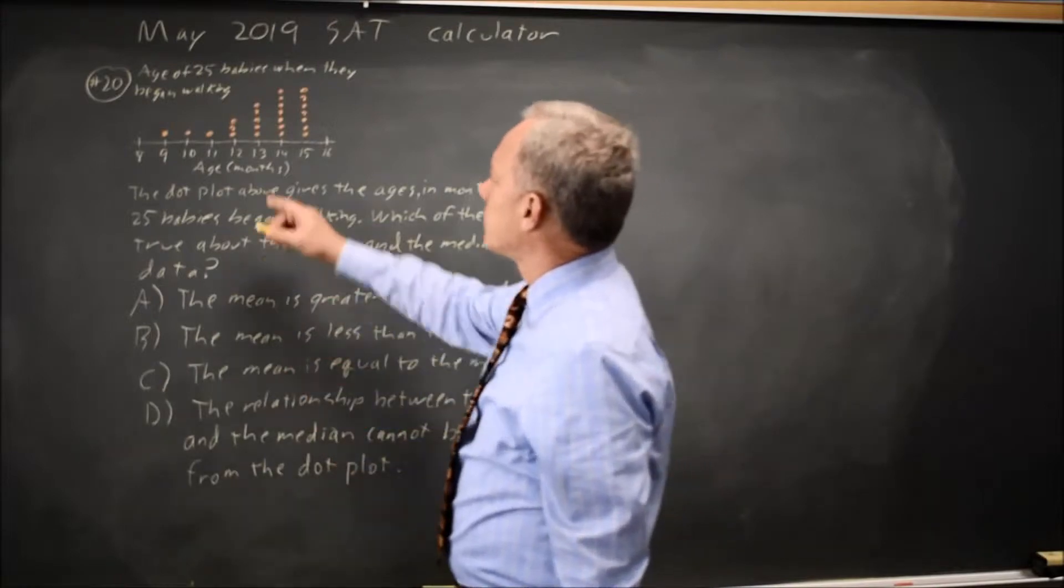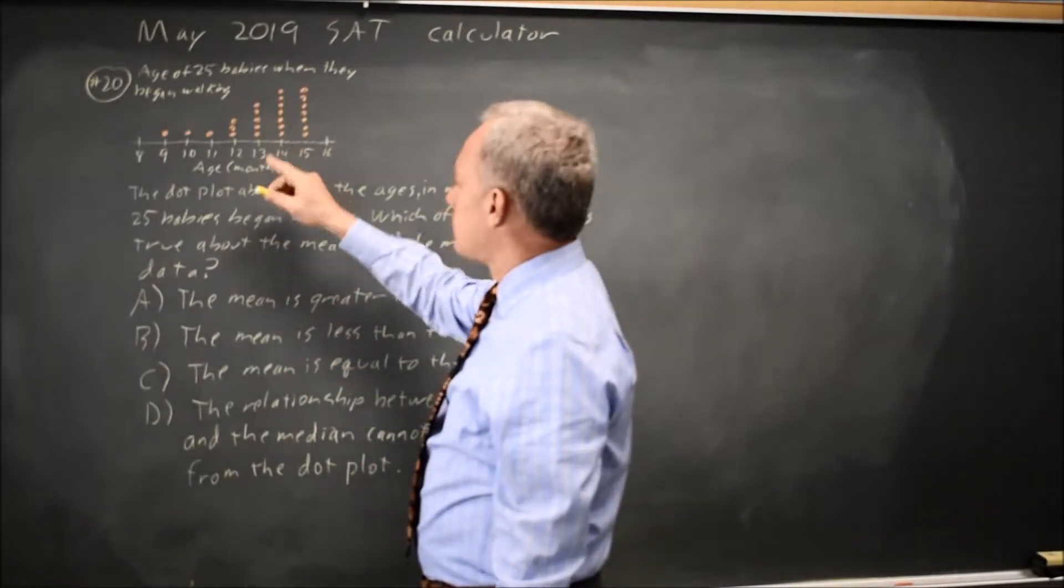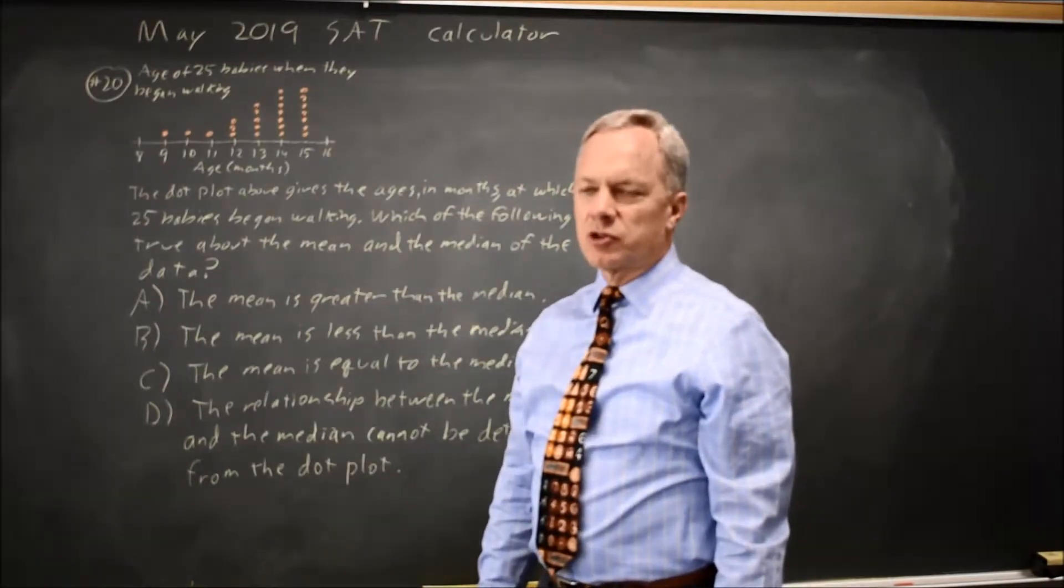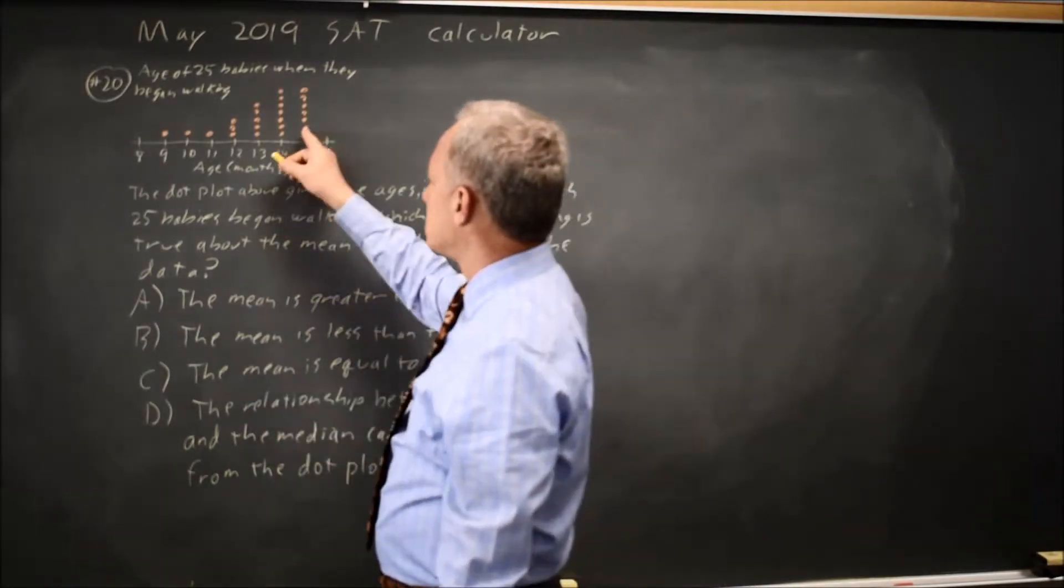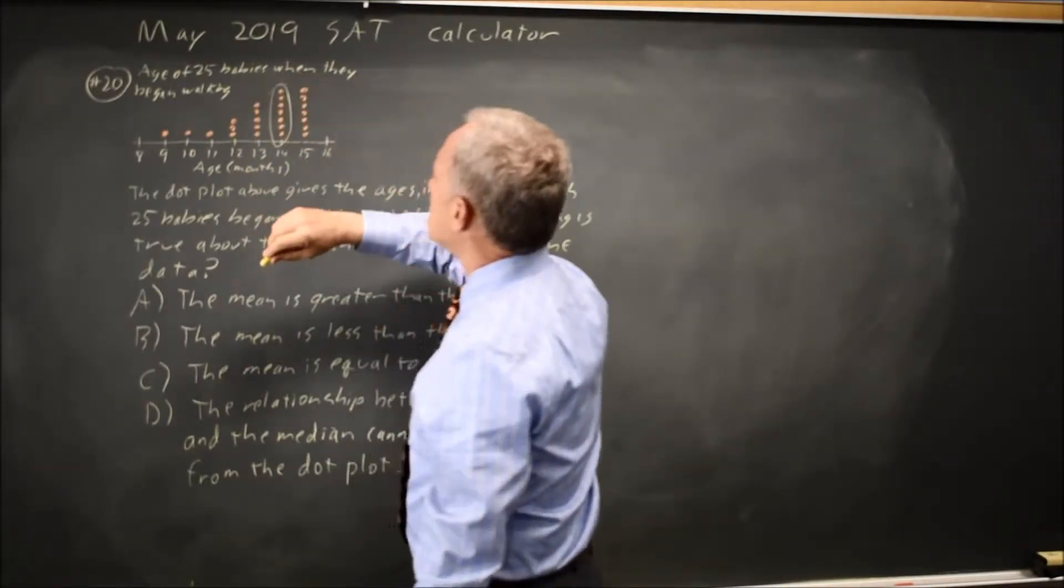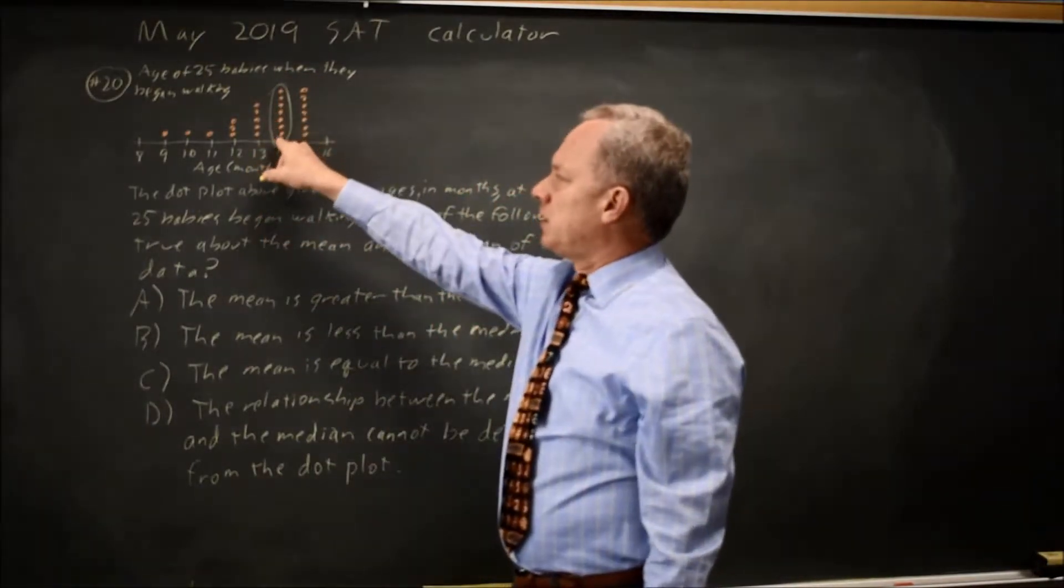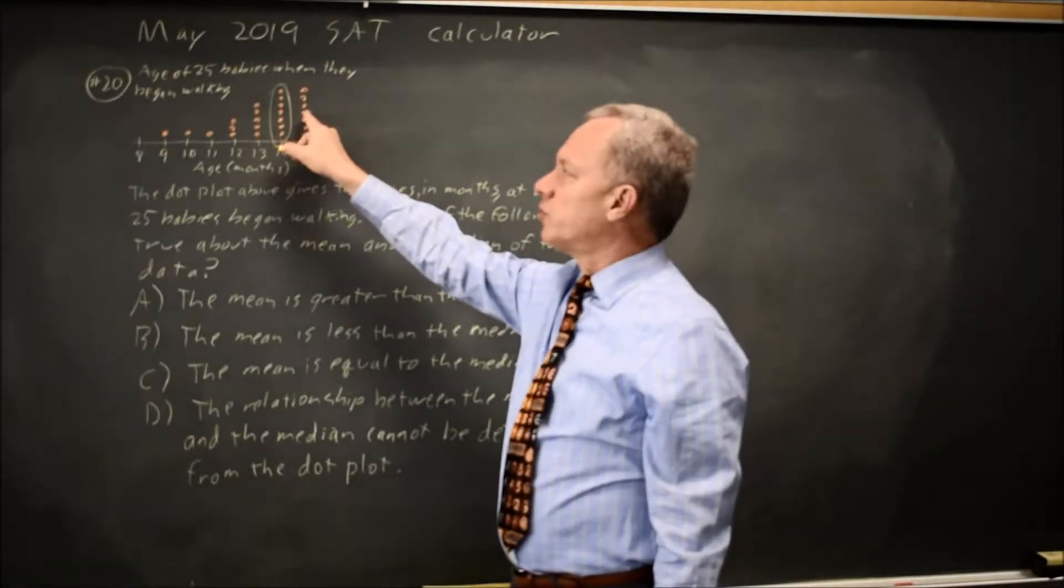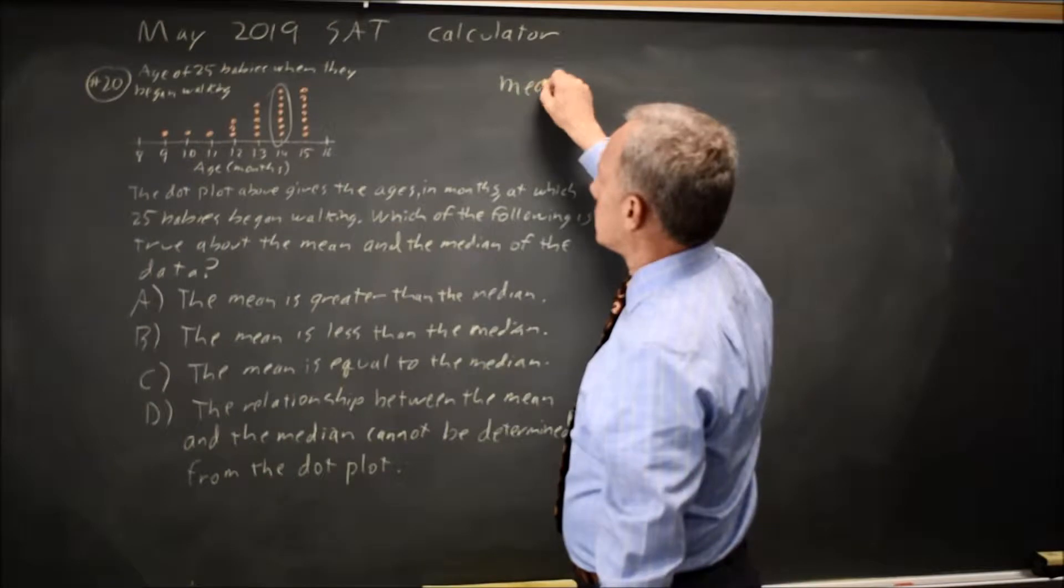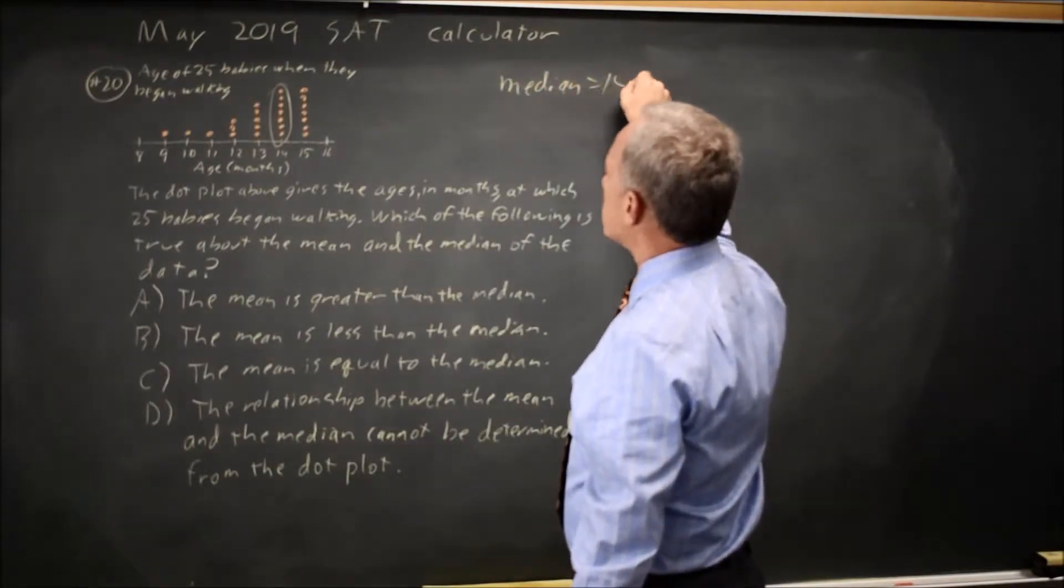There are 25 points on the dot plot and so the median will be the 13th from the largest or 13th from the smallest. Since there's seven 15's and seven 14's, the median is going to be in this group because that's a total of 14 from the top. So median equals 14 months.